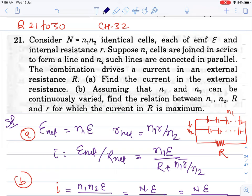Starting question 21: Consider N = n₁ × n₂ identical cells, each of EMF E and internal resistance r. Suppose n₁ cells are joined in series to form a line, and n₂ such lines are connected in parallel. The combination drives a current in the external resistance R. Find the current in the external resistance. First, EMF in series: they add, n₁ times E. In parallel, it doesn't change for identical cells. But resistance in series: n₁ × r. For parallel lines, divide by n₂, so n₁r/n₂.